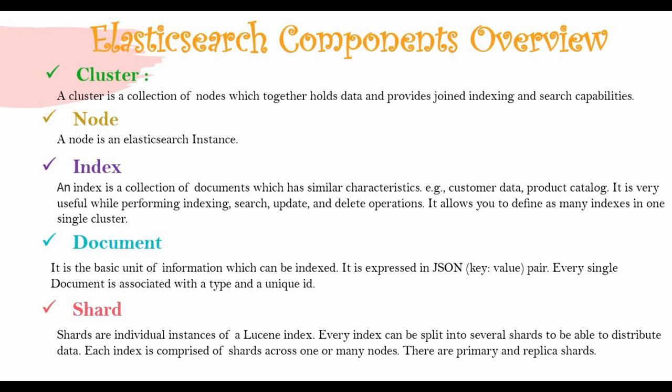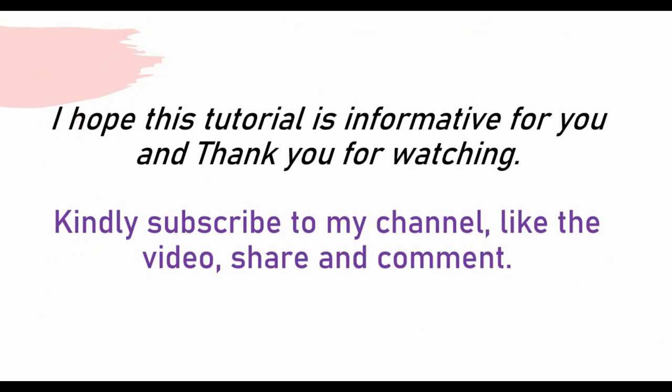So those are the main components of Elasticsearch: cluster, node, index, document, and shards. This tutorial covered the key terminologies and how these things work. In the next tutorial, we will create content in Elasticsearch, import some data, see how the JSON format works, do some queries to get output using key-value pairs, and see how that all works. I hope this was informative — thank you for watching. Please subscribe, like, comment, and share with your colleagues and friends.